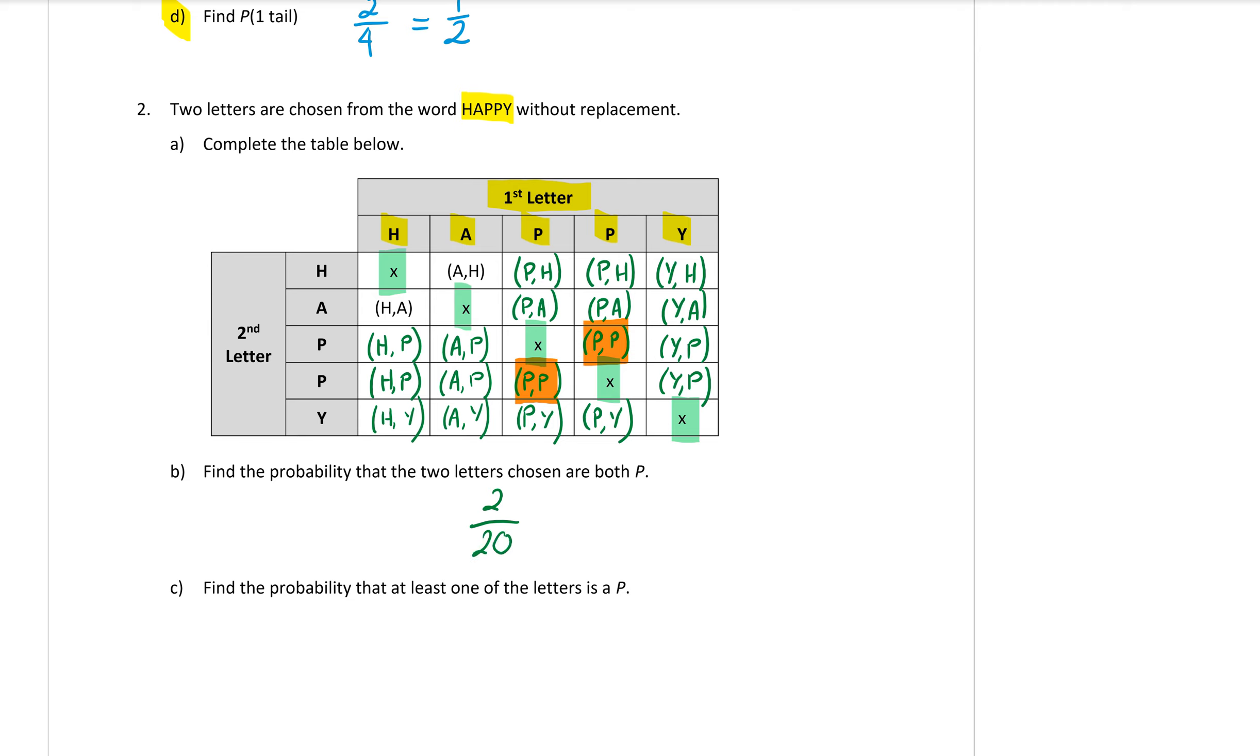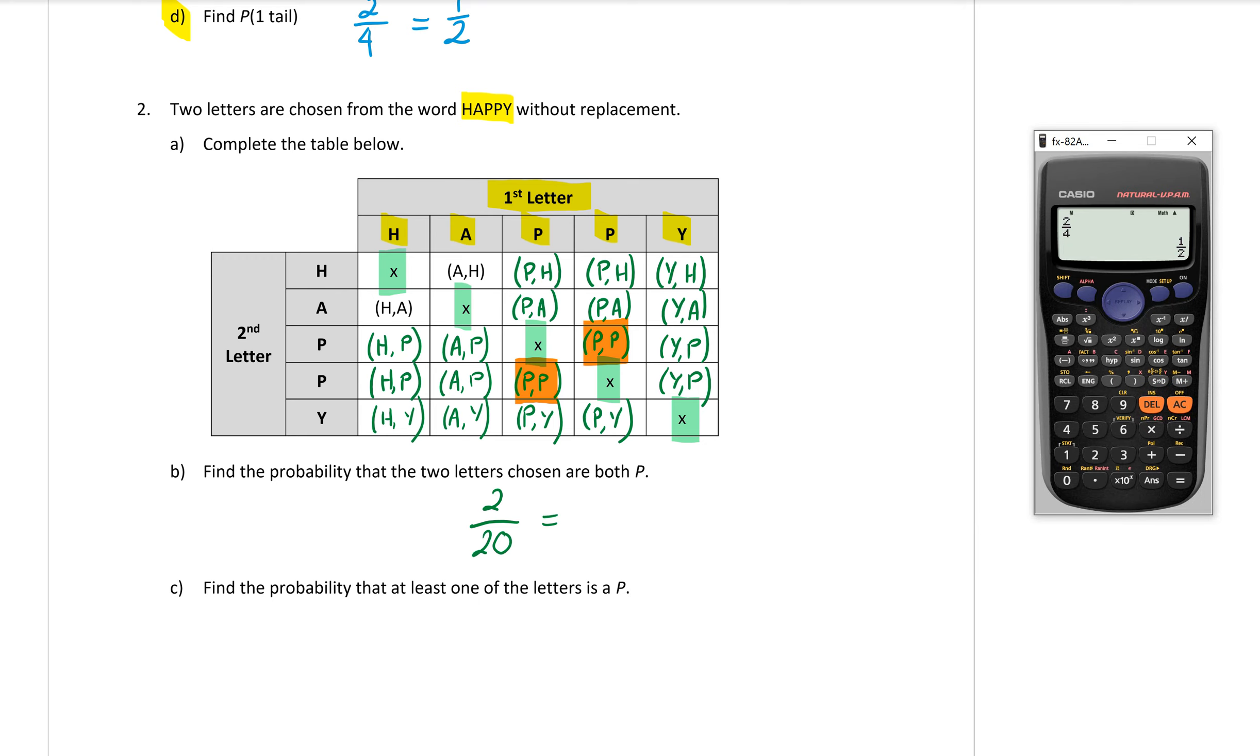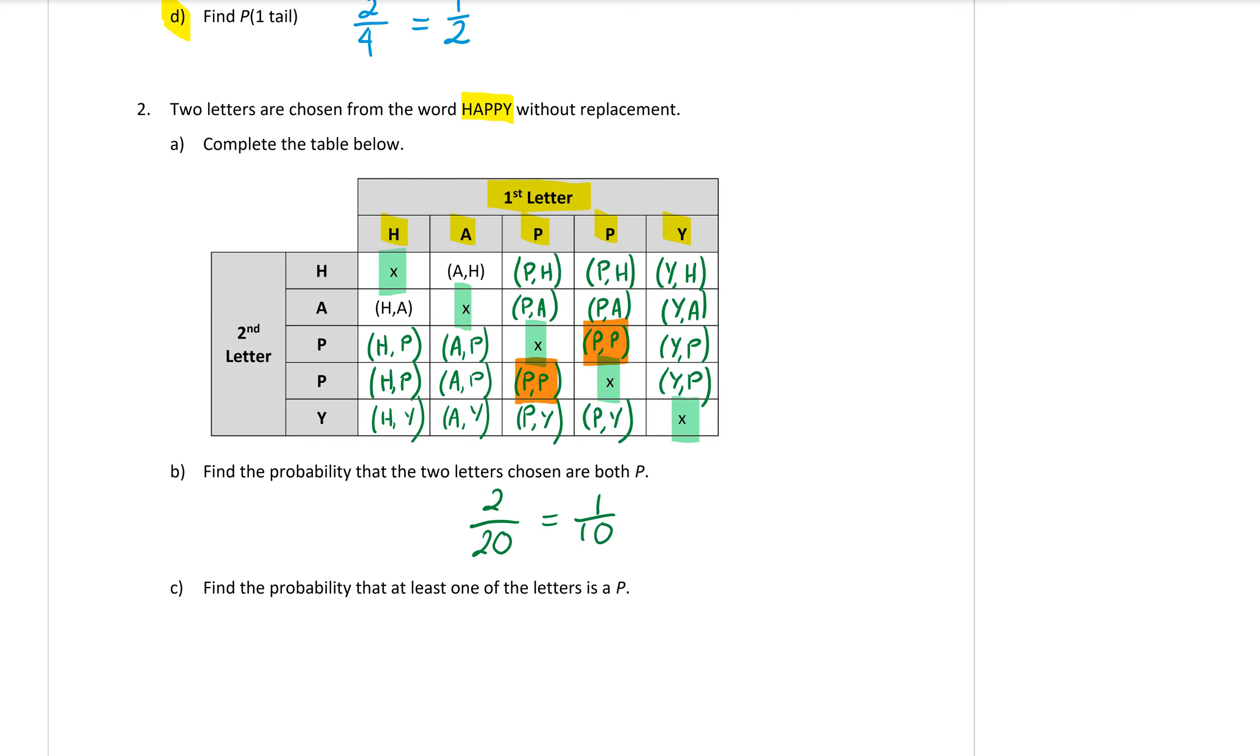So two out of twenty, that is going to simplify, so let's get our calculator out. So two over twenty equals one in ten chance of getting two P's.